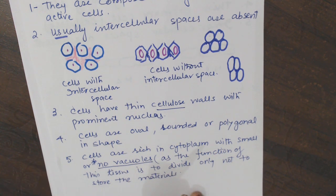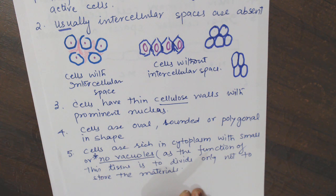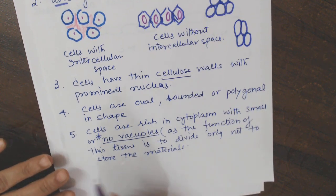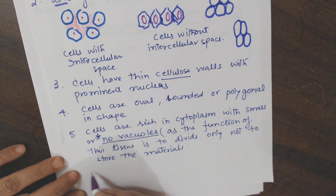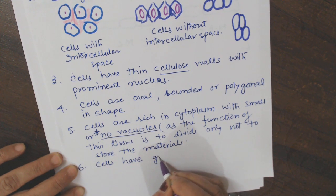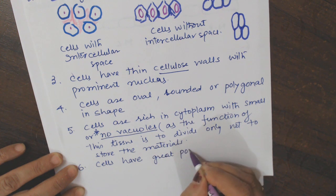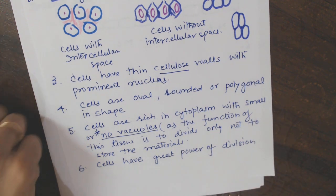Location: meristematic tissues are found at the growing regions of the plant — root tip and shoot tip. They are of three types: apical meristem, lateral meristem, and intercalary meristem, which we have already discussed with diagrams. Sixth point: cells have great power of division.